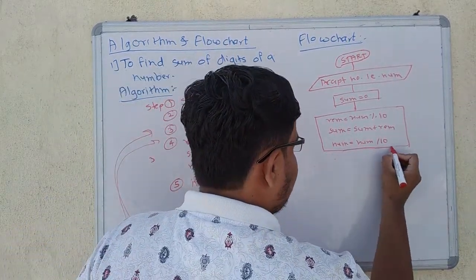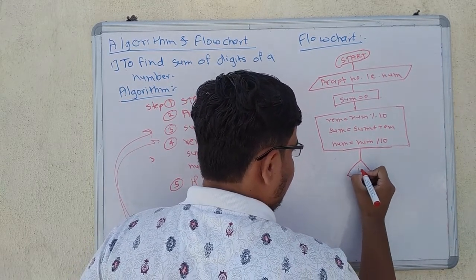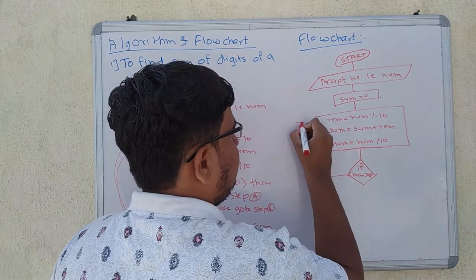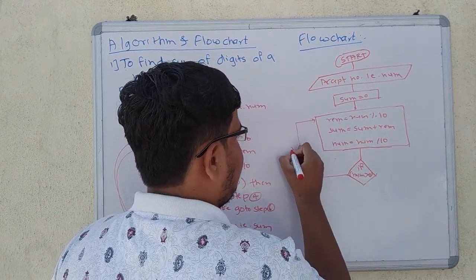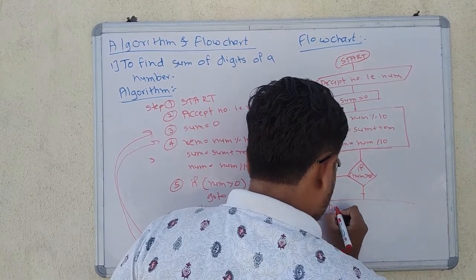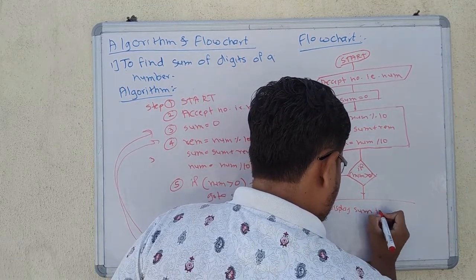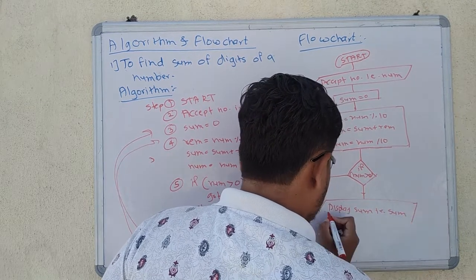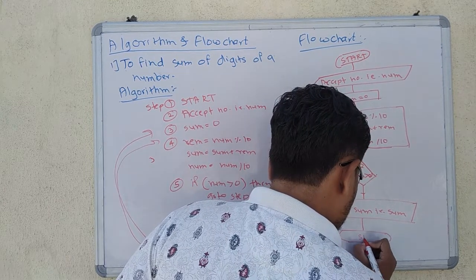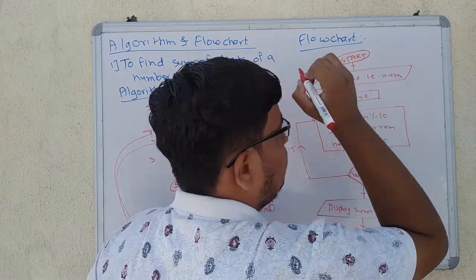The next step is to check whether num is greater than 0 or not. If the condition is true, go back to step 4. If the condition is false, then display sum — that is, the addition result we have found. And the last step, as usual, is Stop. So that covers today's algorithm and flowchart.